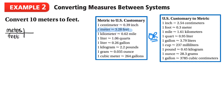In my ratio table I'll fill in one meter is 3.28 feet, then add another column for 10 meters. To get from 1 to 10 I multiply by 10, so whatever I do to the top I do to the bottom - 3.28 times 10 is 32.8. So using this method, 10 meters is approximately 32.8 feet.